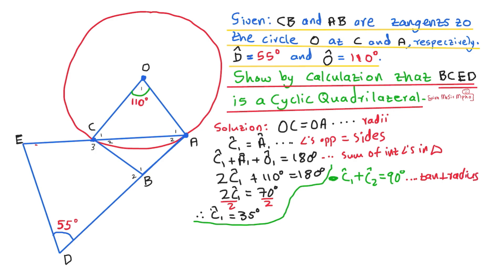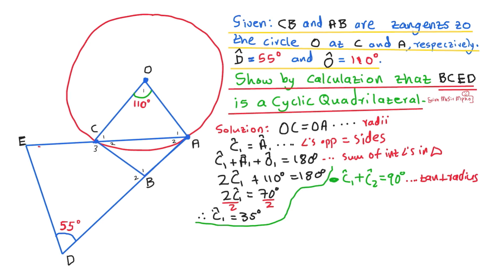Make sense? C1 and C2 will make 90 degrees because tangent CB is perpendicular to radius OC. And remember, I already have the value of C1, which is 35 degrees. So I will substitute C1 with 35 degrees. Then I will transpose it and I will say C2 will be equal to 90 minus 35. I'll just say C1 is 35 degrees plus C2, which is going to be 90. Then I transpose 35. I'll say, therefore, my C2 will be 90 minus 35 degrees will be 55 degrees.